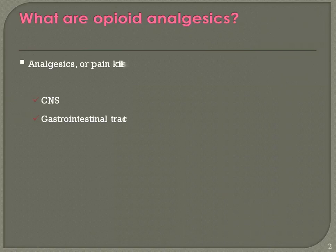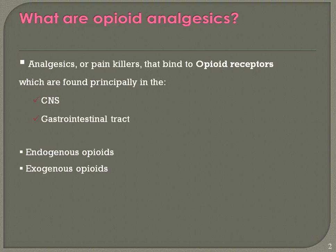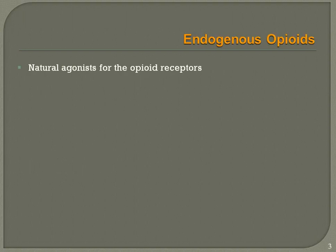Opioid analgesics are analgesics or painkillers that bind to opioid receptors, which are found principally in the central nervous system and gastrointestinal tract. There are two types of opioids: endogenous and exogenous opioids.